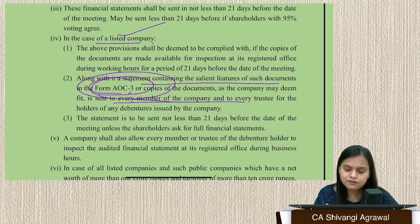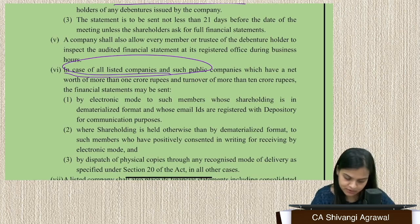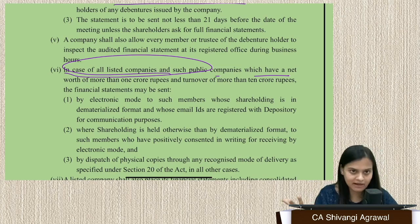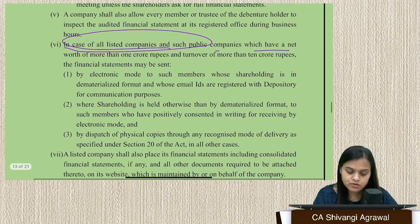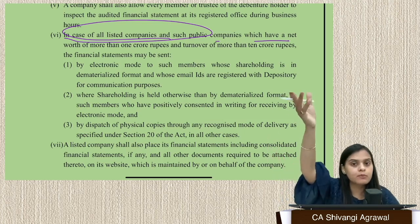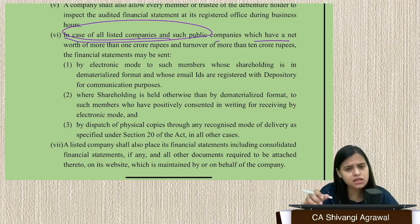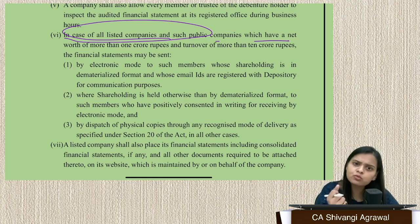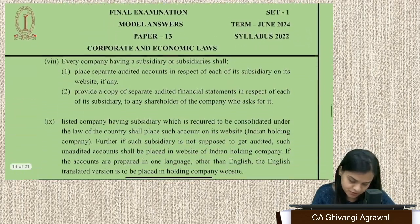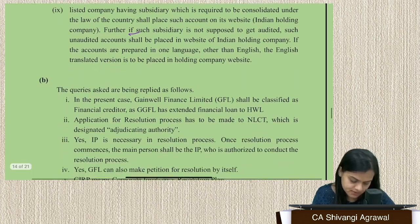Additional provisions: if there is a foreign subsidiary and audit is not mandatory under local laws, unaudited financial statements may be attached. For listed companies and public companies with net worth over 1 crore and turnover over 10 crore, the manner of circulation is specified — if shares are in electronic/demat form, documents are sent electronically to email IDs registered with the depository. Members may request full documents if they want; otherwise, salient features in AOC-3 are sufficient for listed companies.